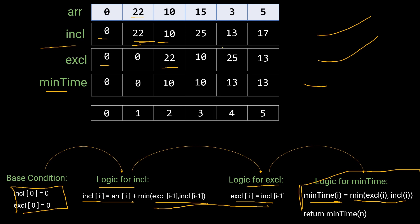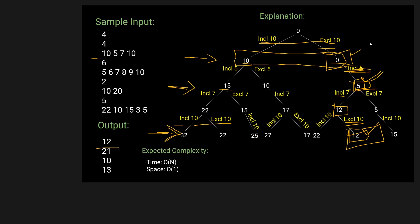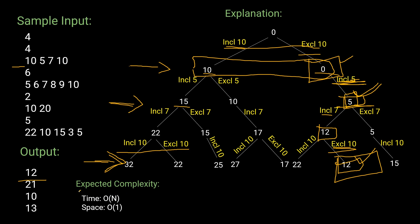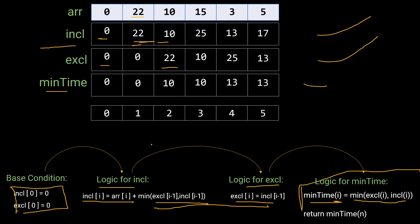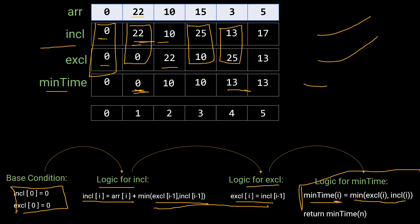This approach works well, but if you check the problem's expected complexity — time O(n) and space O(1) — our solution uses O(n) time but also O(n) space. Notice that to fill each min_time[i], we only use include[i-1], exclude[i-1], include[i-2], and exclude[i-2] — only four values. So we can reduce space complexity to O(1).